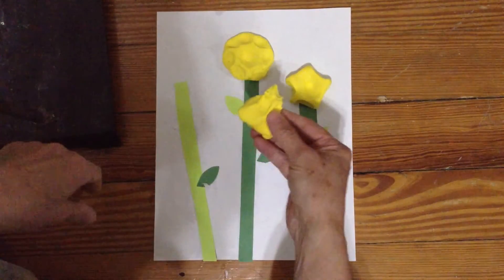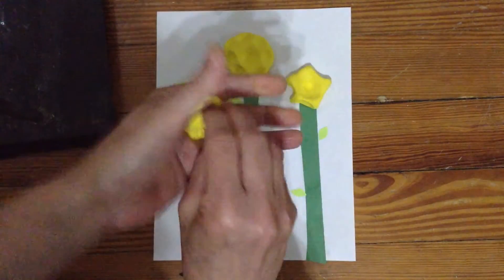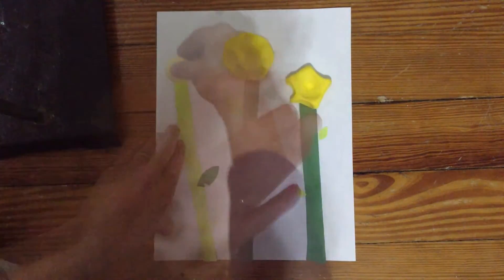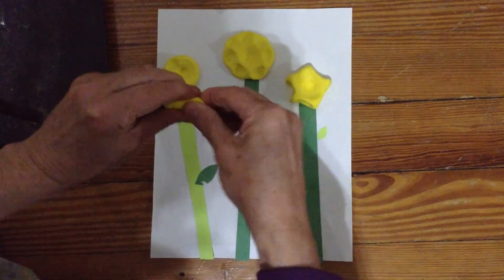And for my last flower, pinch some off. I'll show you why in a minute. Roll it into a ball, press it into a circle. And then make the petals.